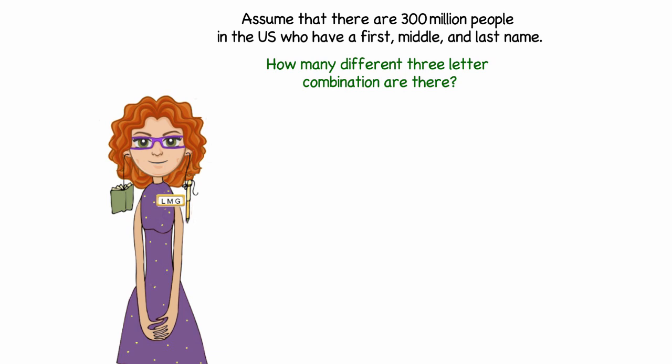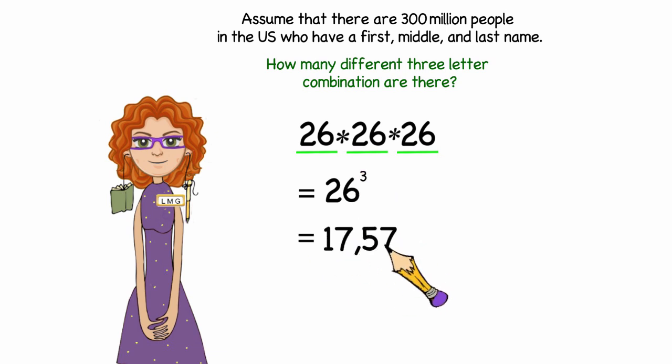That's very similar to the other question. We have three possible options, and there's 26 letters for the first choice, 26 for the second, and 26 for the third. So when I multiply that out, I get 26 to the third power or 17,576.